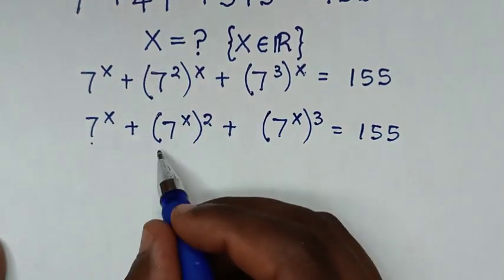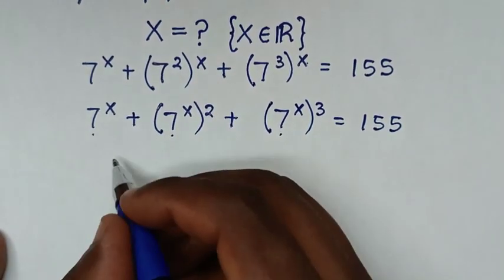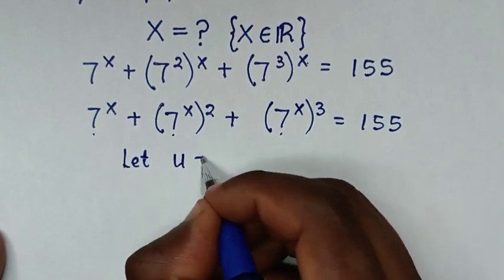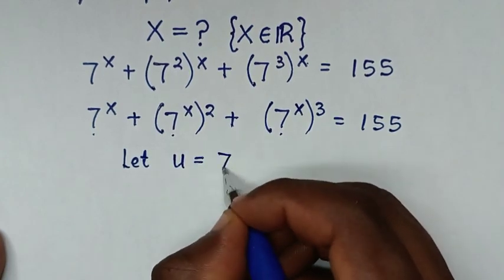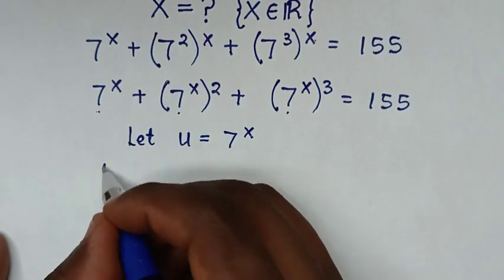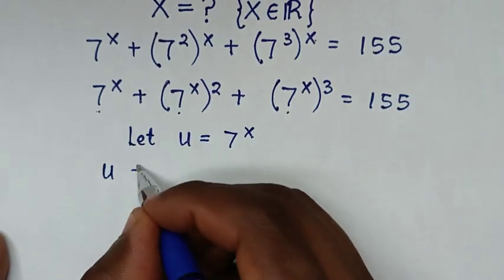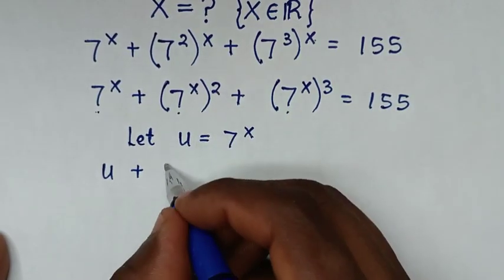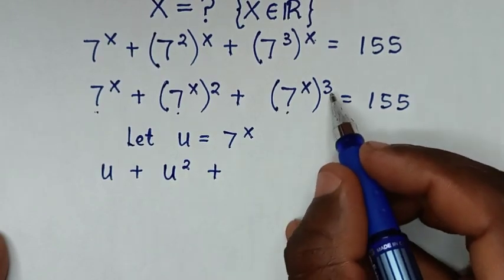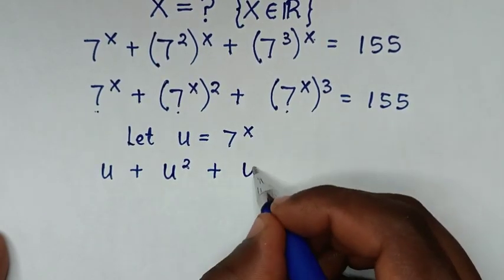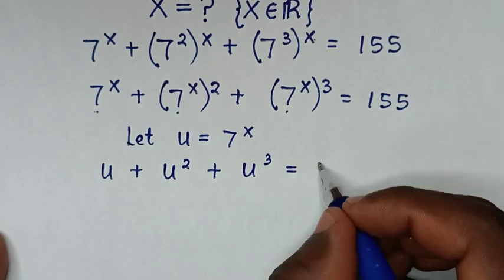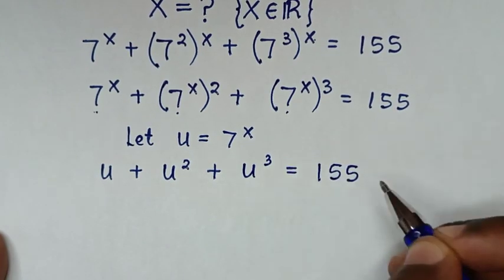From here, 7 power x is common throughout. So we let u equal to 7 power x. The equation becomes u plus u squared plus u power 3 is equal to 155.